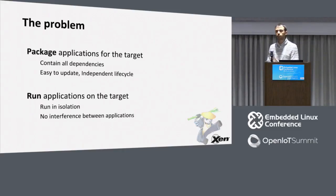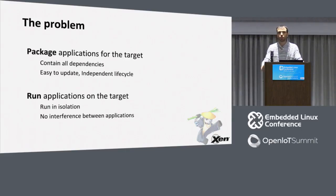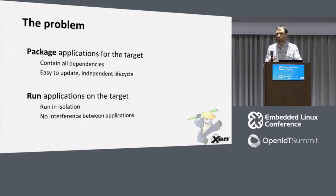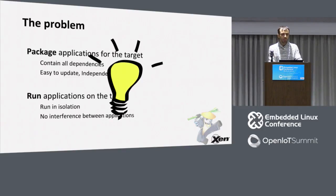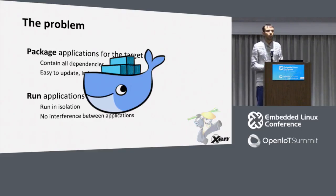The second part of the problem is running the application actually on the target. Now that we have found a way to install and manage the updates of the apps on our target, we need to find a way to run them securely in isolation so that the apps don't interfere with one another. These are actually two quite different problems. One idea is to solve them both with Docker, because Docker actually comes with a set of technologies that allow us to kind of do both.